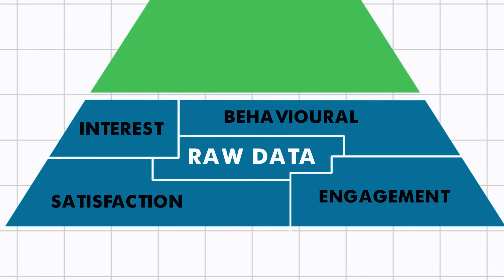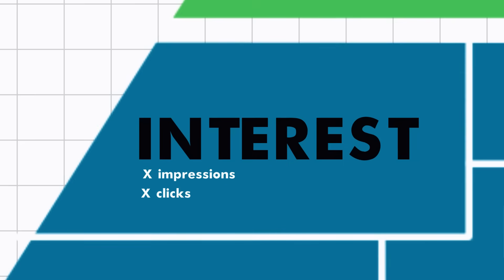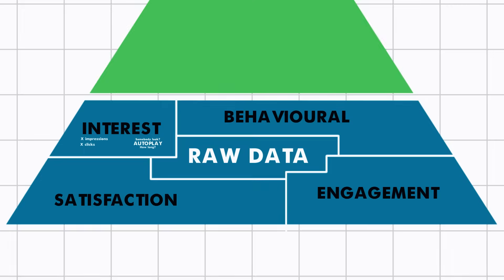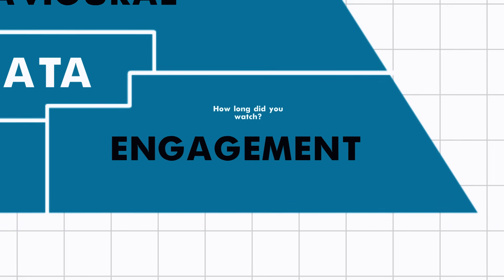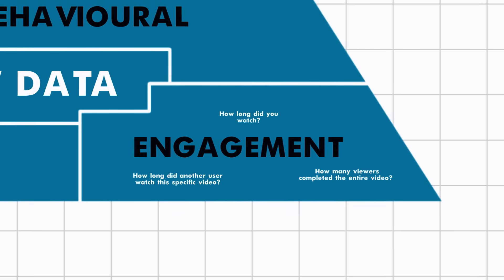Looking at interest data, we can measure the number of impressions a video got, the number of times somebody clicked on the thumbnail, or even how long they looked at the autoplay. For engagement data, we look at how long a user watched a certain video, how many viewers completed the full video, and how many minutes on average a user spends on YouTube. That's the idea behind raw data — it's simply collecting very measurable information.